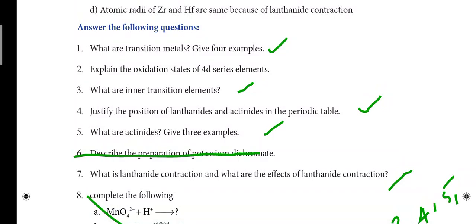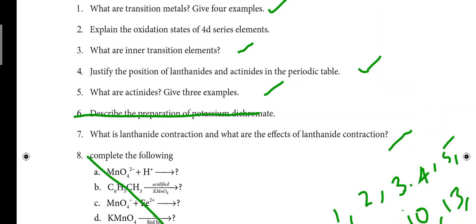Hi everyone, so in this video we will talk about Lesson 4, 12th standard chemistry 1st volume — D and F block elements, that is transition and inner transition elements. We'll cover important book pack and book inside questions. Already 3 lessons have been uploaded, so this is the 4th lesson.